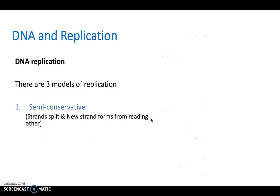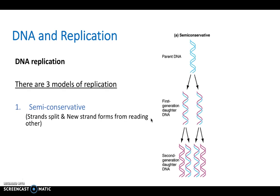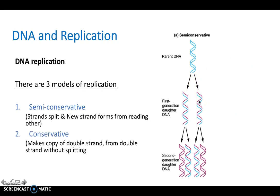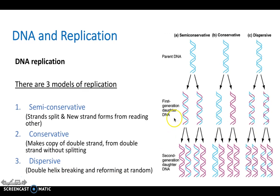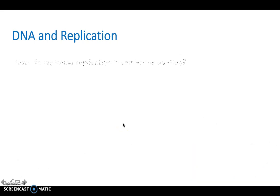So there are three models of replication. Firstly, semi-conservative. In other words, the strands split up and new strands form by reading each other. Alternatively, we can have conservative replication. So we make a copy of the double strand from the double strand without it splitting. And dispersive. So double helix, breaking, and reforming at random. And these three were hypotheses as to how replication occurs.